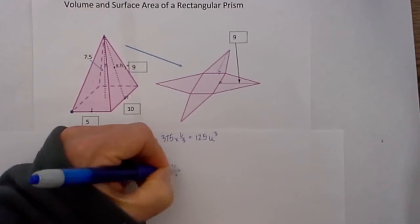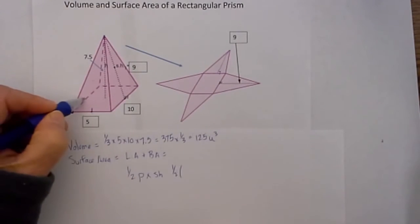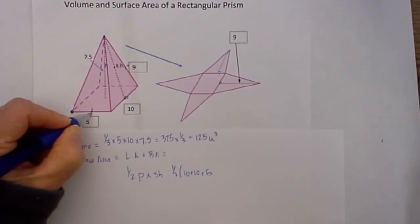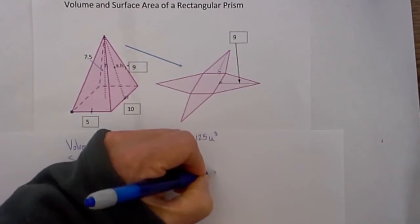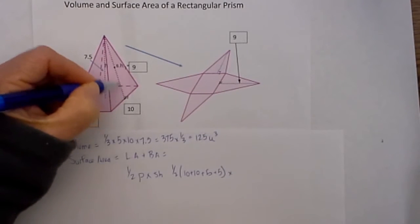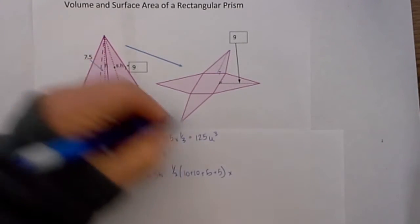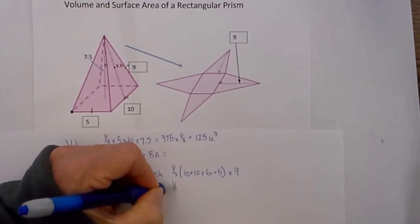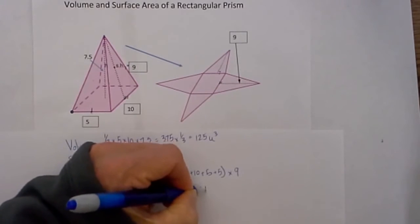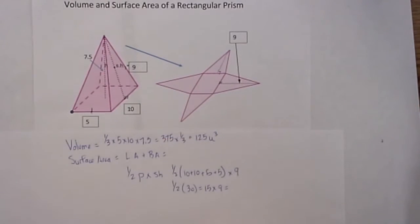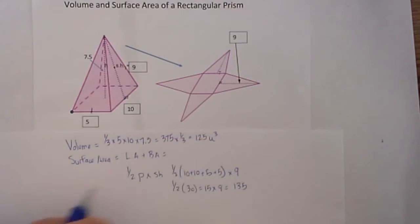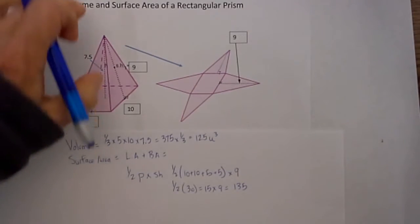I take 1/2 times the perimeter: 10 plus 10 plus 5 plus 5, times the slant height which is 9. That equals 1/2 times 20 plus 1/2 times 30, which is equal to 15 times 9, which is equal to 135. But that is not my surface area — that only gets me halfway there.